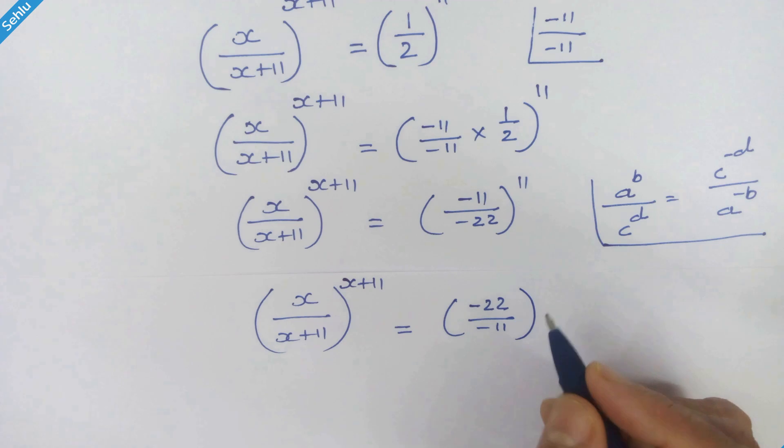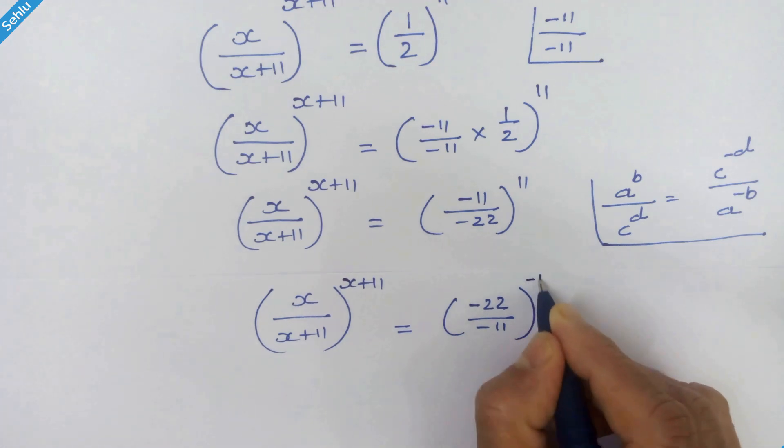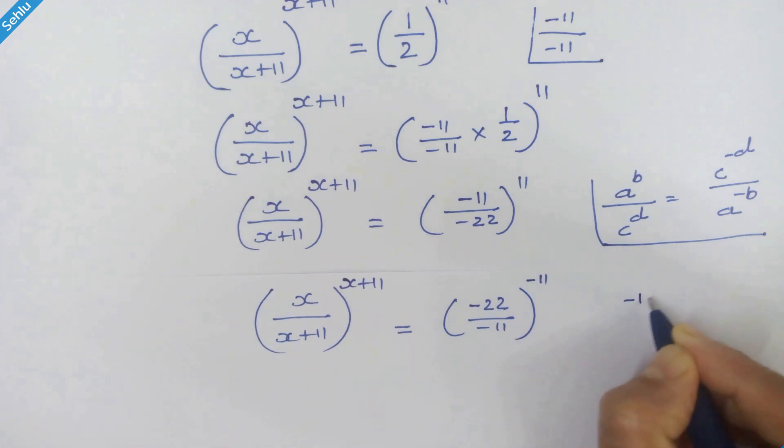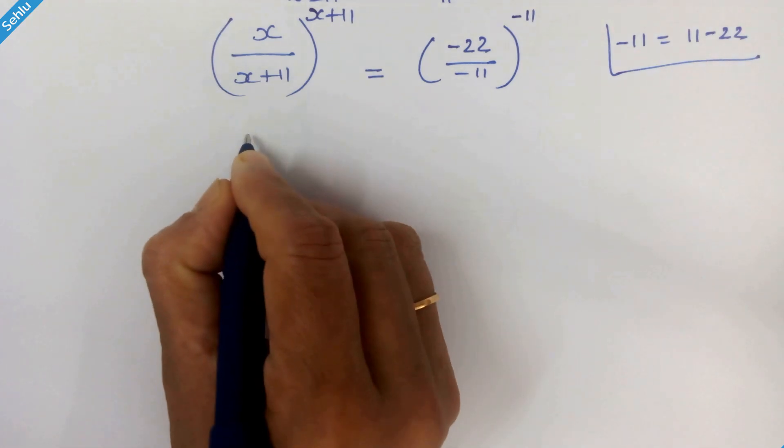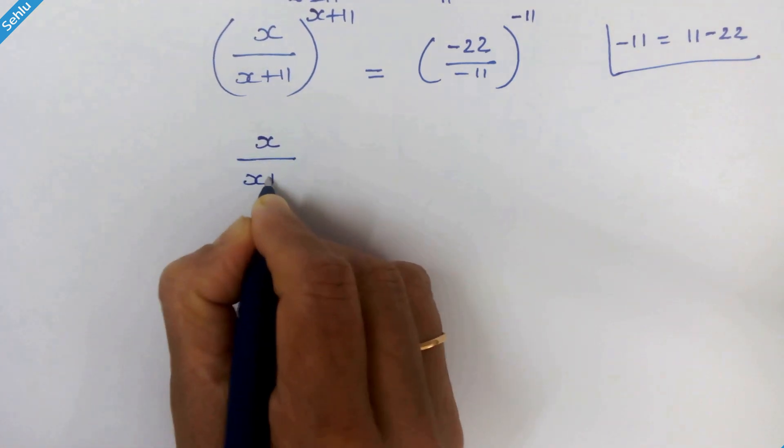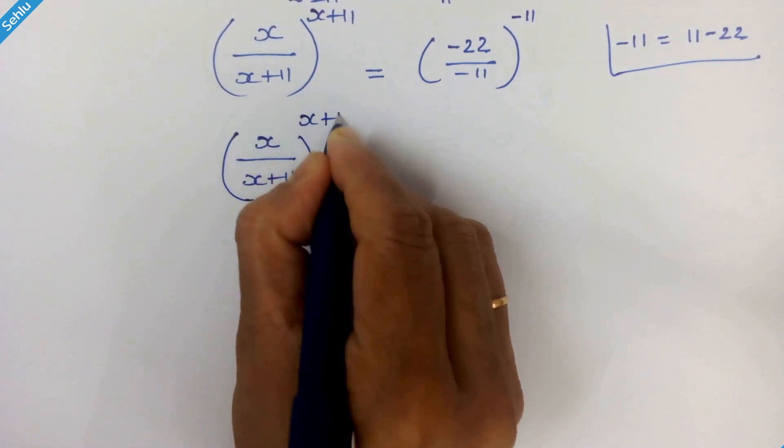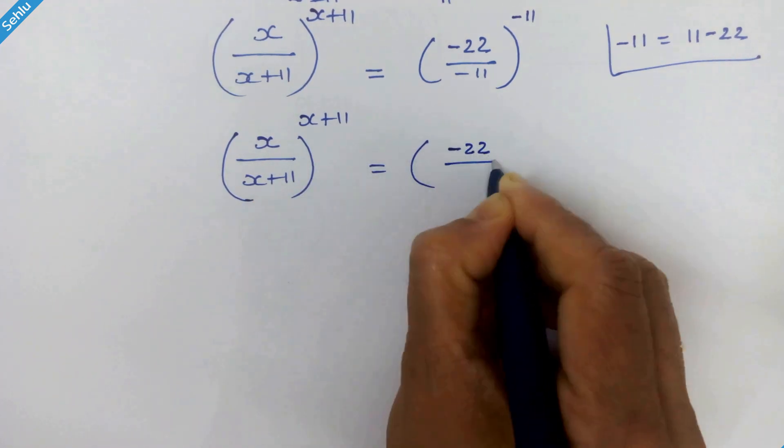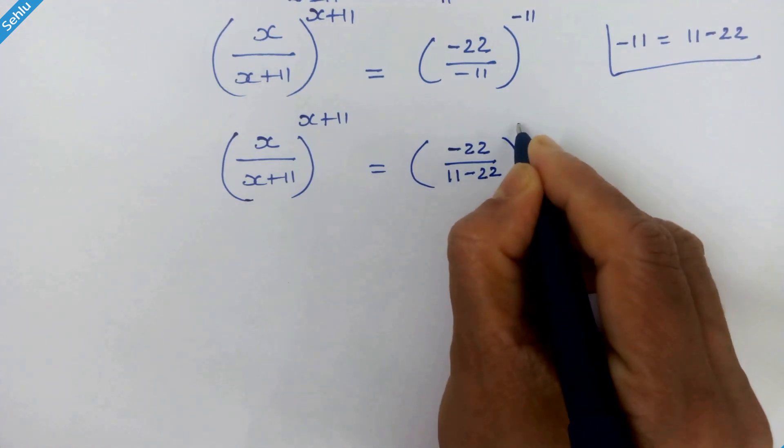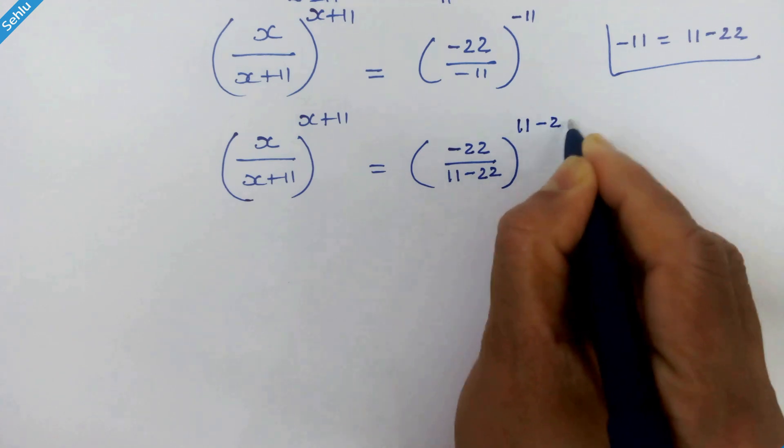Here it is the same exponent so we can put negative 11 belongs to the whole bracket. Now this negative 11 can be written as 11 minus 22. So we have is equal to minus 22 upon 11 minus 22 whole raise to 11 minus 22.